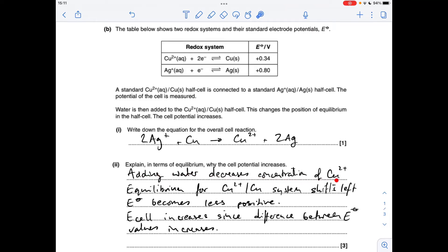So I'm phrasing my answer like this: Adding water decreases the concentration of copper 2 plus ions. The equilibrium for the copper 2 plus copper system shifts left. The standard electrode potential becomes less positive, and therefore the cell potential or E cell increases because the difference between the electrode potential values increases.